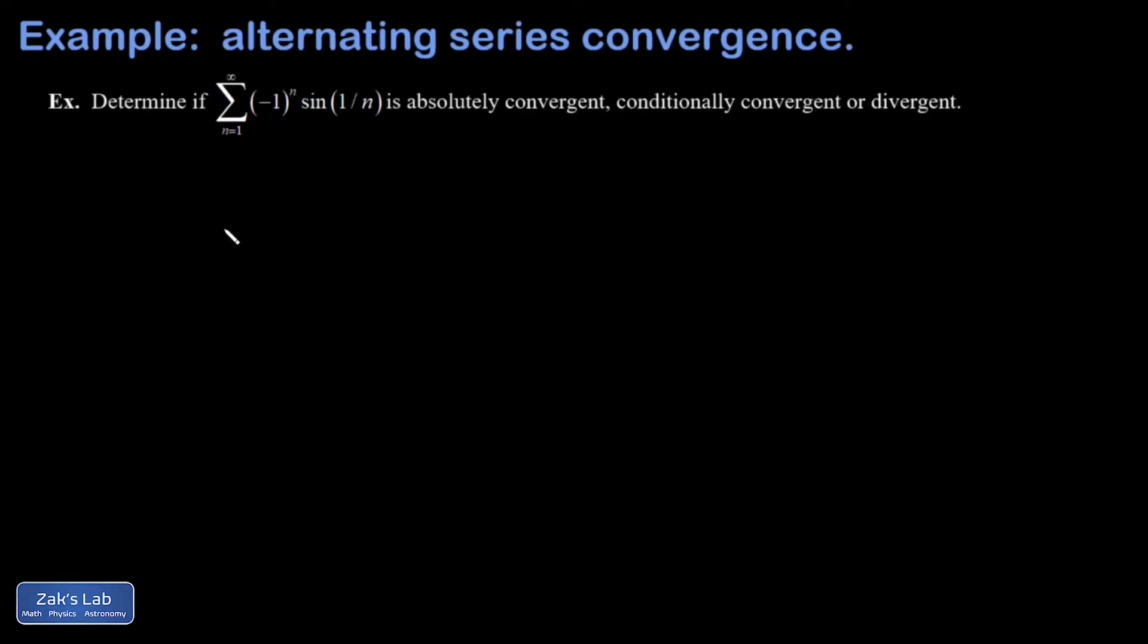In this problem, we're asked to investigate the convergence of an alternating series, negative 1 to the n, sine 1 over n.